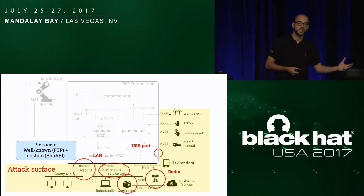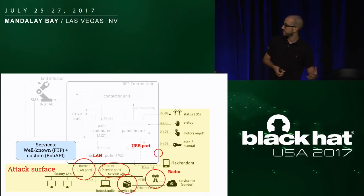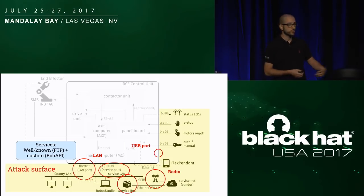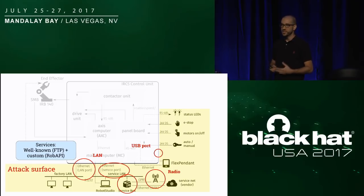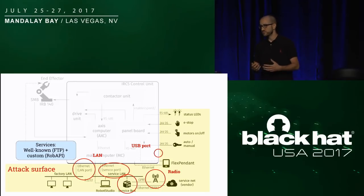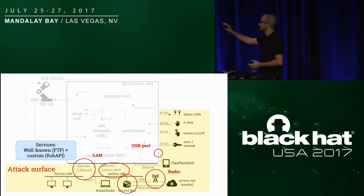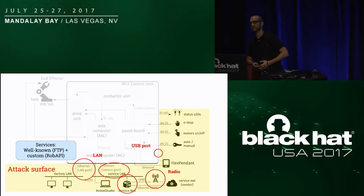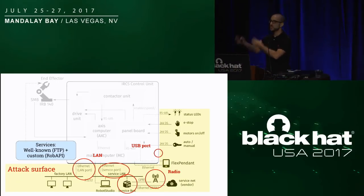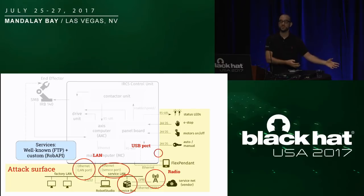For example, we found that ABB uses FTP as a means to upload code or upgrade certain components. There are also non-standard protocols — ABB uses this API to receive commands, and the newest generation also has a REST-like API. So they're getting more and more open. All of this is sitting in a pretty wide attack surface, from simple USB ports to Ethernet ports, and even radio devices. What you see with the little antenna on the right is a 4G modem.